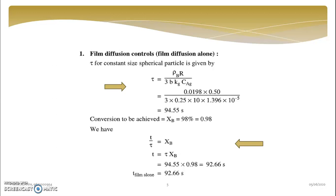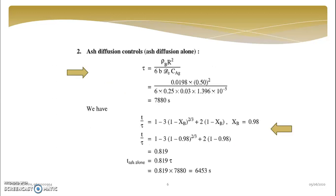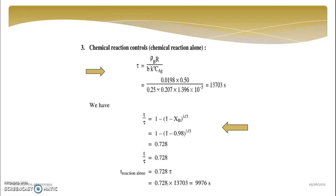So first of all we will calculate tau for all the three cases: tau for diffusion, tau for ash layer, and tau for chemical reaction.